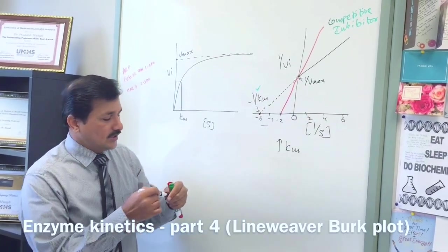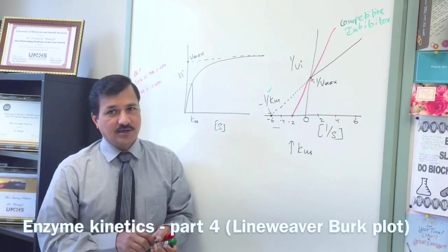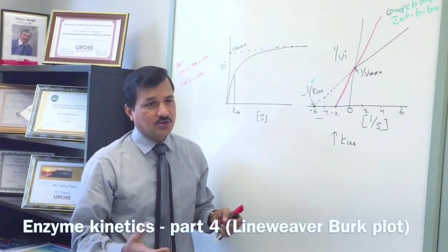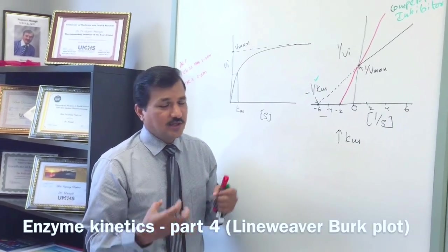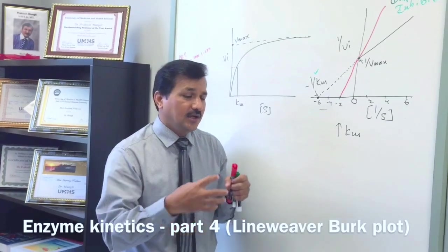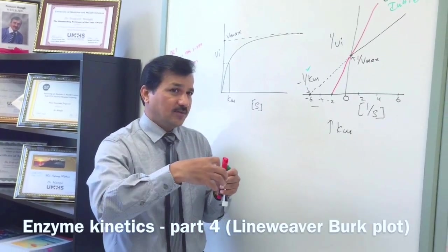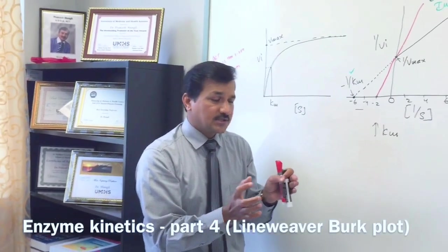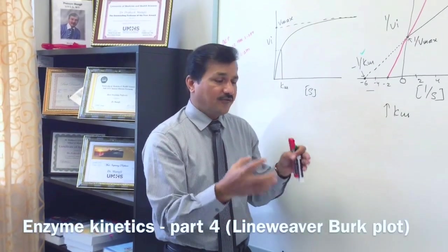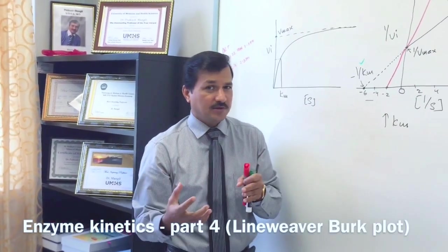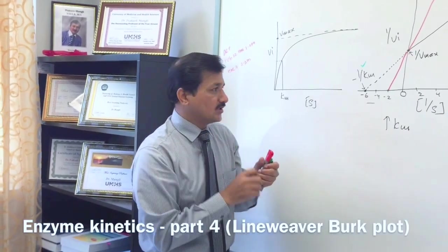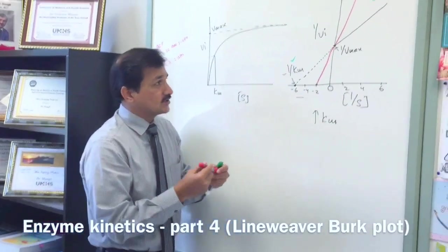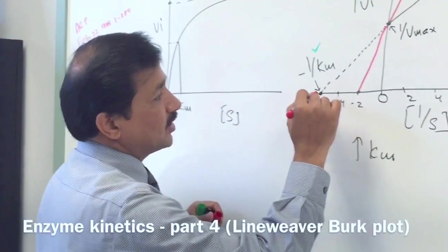Now let us see what a non-competitive inhibitor does. A non-competitive inhibitor is not a structural analog — there is no competition. It binds to a site other than the active site, which changes the conformation of the active site so the substrate does not fit well. Because of this improper fitting, reaction velocity decreases, but the affinity of the enzyme to bind with the substrate is normal. So the Km remains the same, but enzyme velocity decreases.